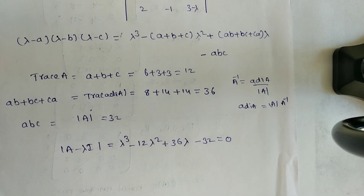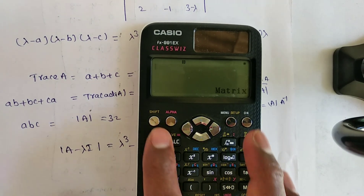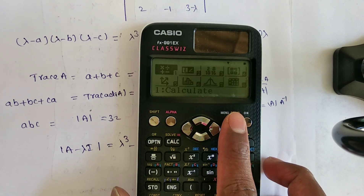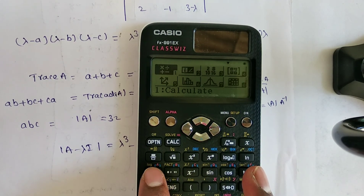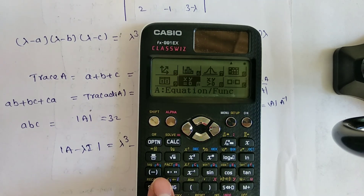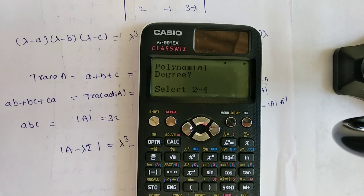To find the roots of this degree-3 polynomial using the calculator: change to normal mode, press menu, go to equations. Select the polynomial option, press 2 for polynomial, then press 3 for degree 3. This is compared with Ax³ + Bx² + Cx + D.